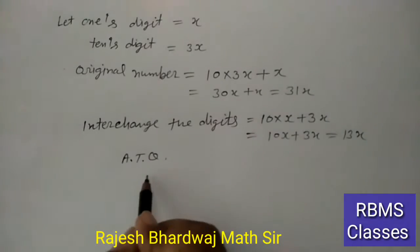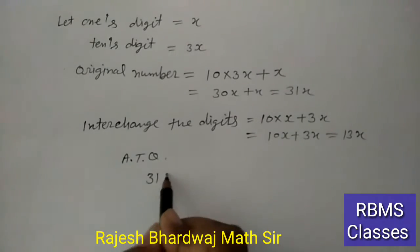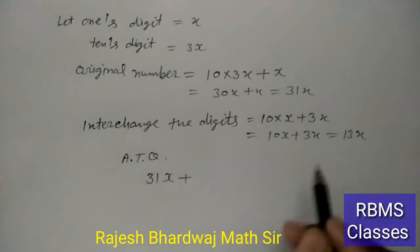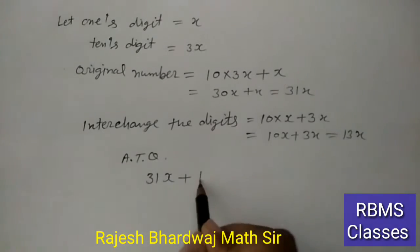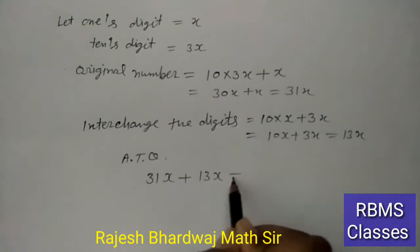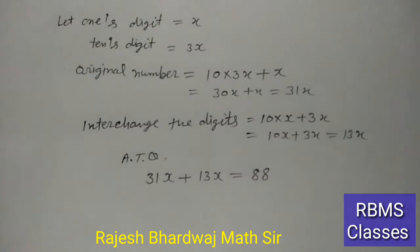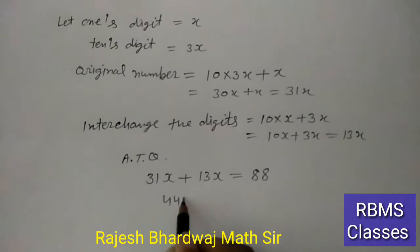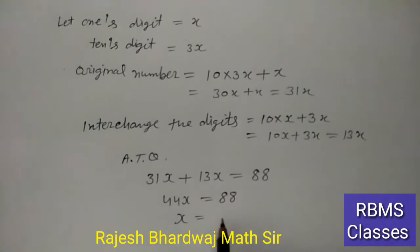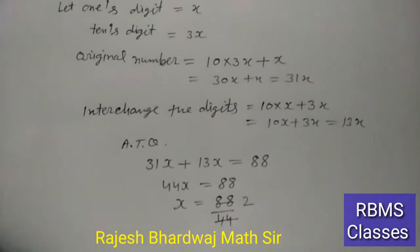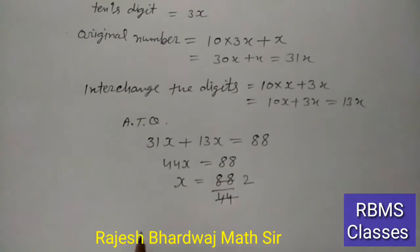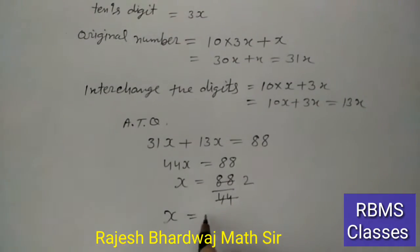तो यहां हम लिखेंगे: original number 31x + interchange number 13x = 88। यहां से solve करते हैं: 44x = 88, और x = 88 ÷ 44 = 2।